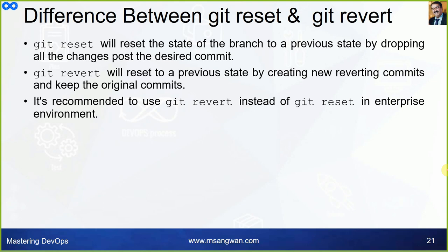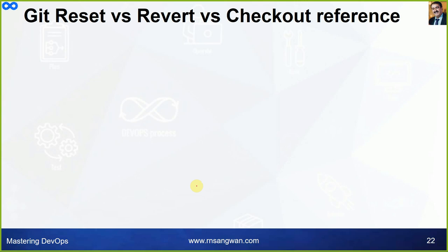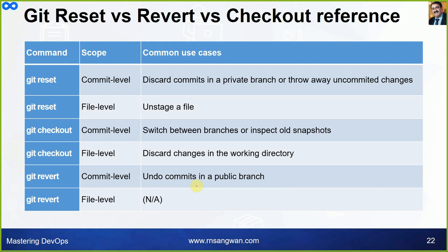It is recommended to use git revert instead of git reset in an enterprise environment. Summary reference of commands: git reset at commit level — discard commits in a private branch or throw away uncommitted changes; git reset at file level — unstage a file; git checkout at commit level — switch between branches or inspect old snapshots; git checkout at file level — discard changes in the working directory; git revert at commit level — undo commits in a public branch.